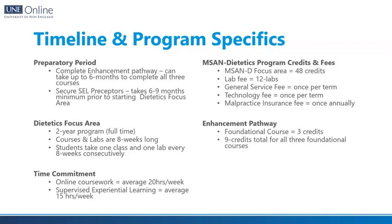Once you begin the core dietetics focus area courses, the program is designed to be completed in two years full-time. You will take two three-credit dietetic courses paired with two one-credit lab courses per term, inclusive of summers, with each course and lab being eight weeks long. The expected time commitment is that students will average 20 hours on coursework and around 15 SEL hours per week — potentially upwards of 35 hours per week in total. Most students do not work while going through the program because of this time commitment, though UNE does not prohibit it and wants you to make the best choices to be successful.